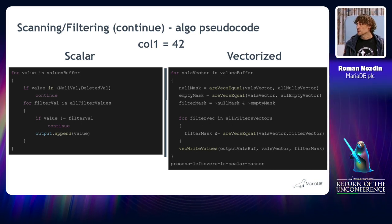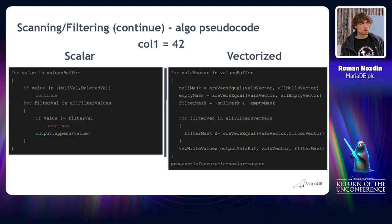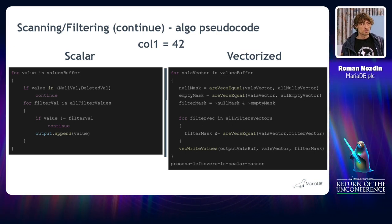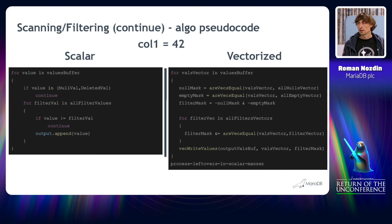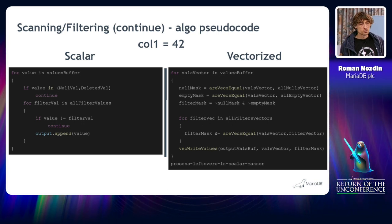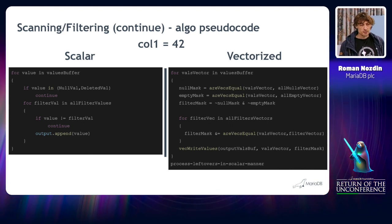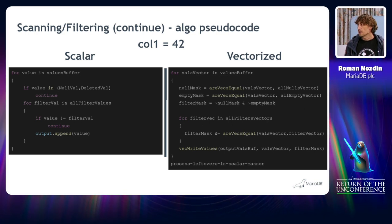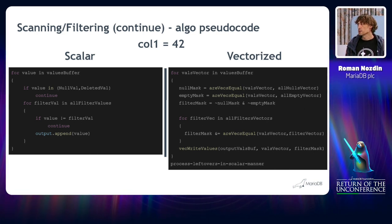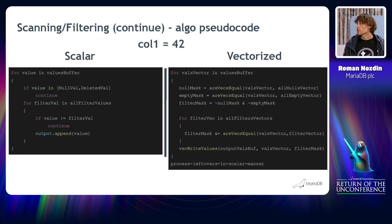An important part is that there might be leftovers because you cannot process all the values. Let's say we have not 8,192 values, but we have one less. So we have three values left that must be processed in a scalar manner.